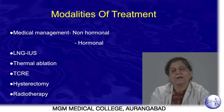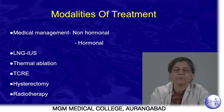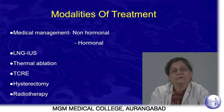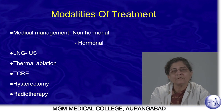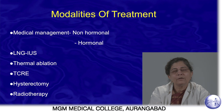The modalities of treatment available for DUB: since this is a disease of reproductive age, our first aim is to preserve the uterus, so hysterectomy is the last choice. We start with medical management — either hormonal or non-hormonal — or locally via intrauterine devices. Conservative surgeries burning or removing the endometrium are an option. In rare cases or when medical management fails, hysterectomy or very rarely radiation may be used.